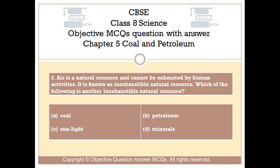Question number 2. Air is a natural resource and cannot be exhausted by human activities. It is known as an inexhaustible natural resource. Which of the following is another inexhaustible natural resource? Option A: Coal. Option B: Petroleum. Option C: Sunlight. Option D: Minerals.